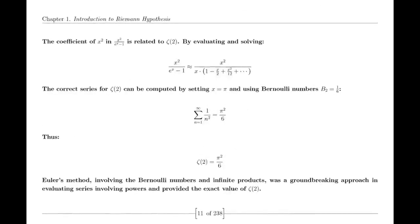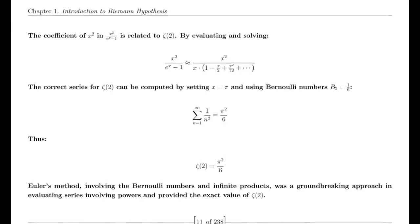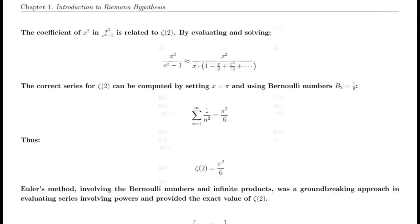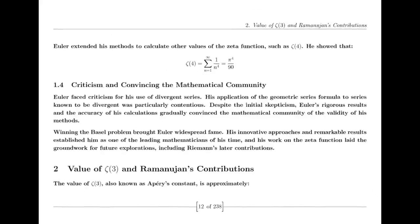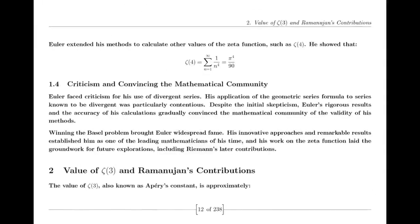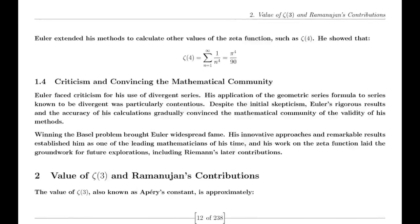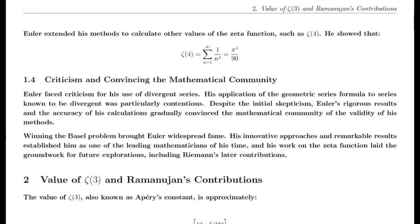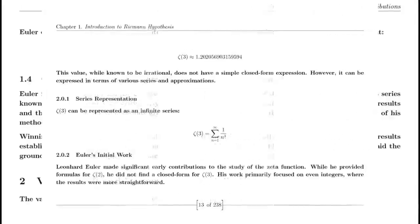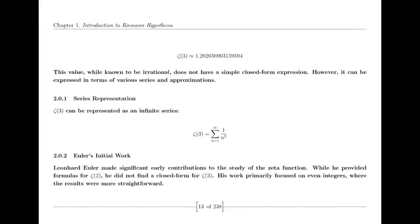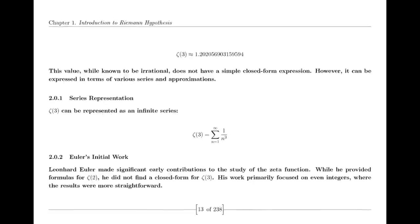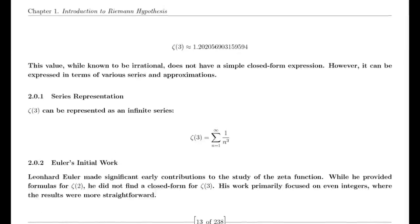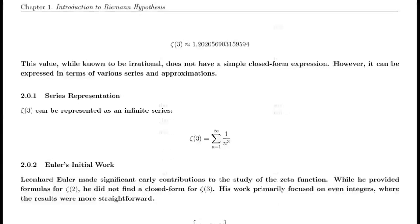Riemann's Seminal Paper. In 1859, Riemann published his seminal paper on the distribution of prime numbers, which introduced the zeta function and laid the groundwork for modern analytic number theory. This paper was a milestone in mathematical history and has had a lasting impact on the field, influencing subsequent research and discoveries.